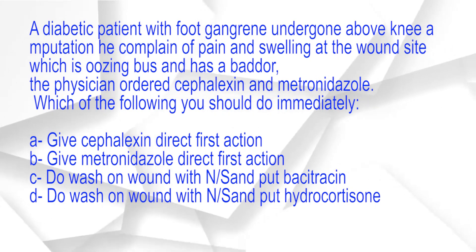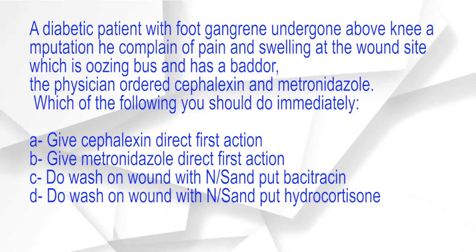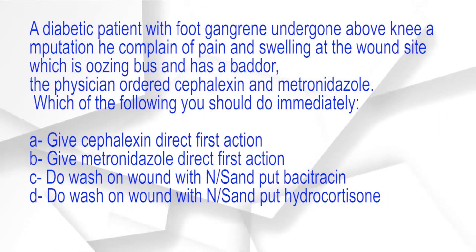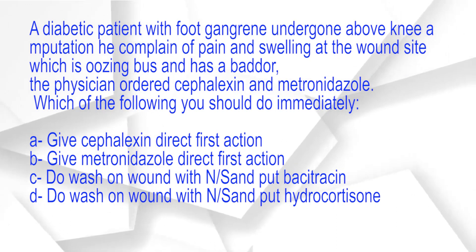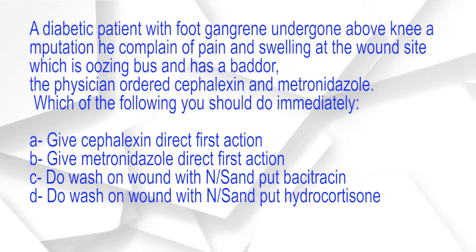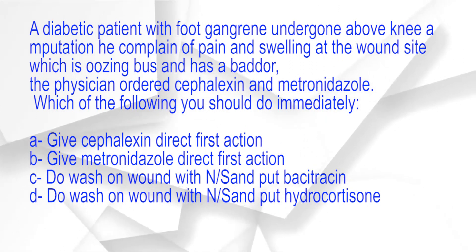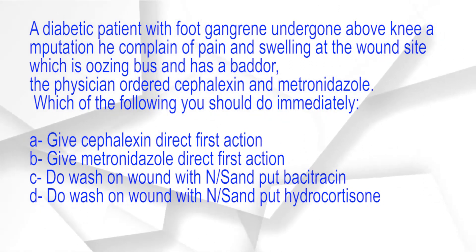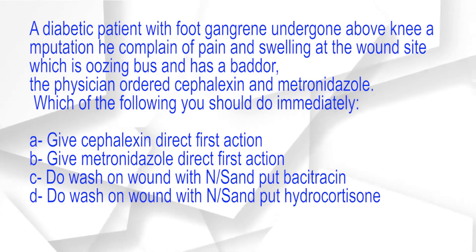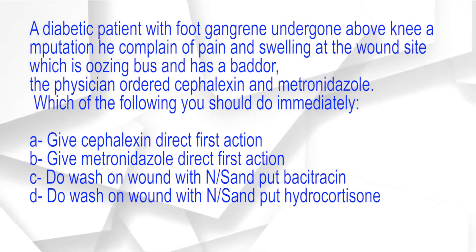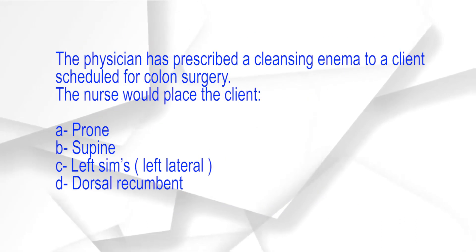A diabetic patient with foot gangrene undergoes an above-knee amputation. The patient complains of pain and swelling at the wound site, which is oozing pus and has a bad odor. The physician ordered cephalexin and metronidazole. Which of the following should you do immediately? A. Give cephalexin first. B. Give metronidazole first. C. Wash the wound with normal saline and apply bacitracin. D. Wash the wound with normal saline and apply hydrocortisone. The correct answer is option C.